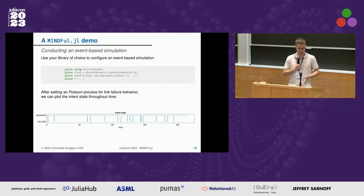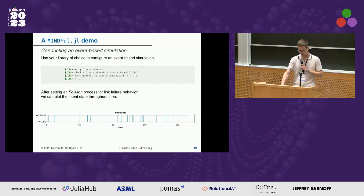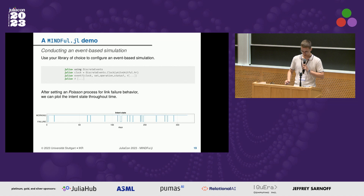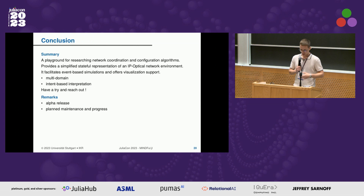You can further use that for event-based simulation with your third-party library of choice. Here we use DiscreteEvents, and after setting a Poisson process for link failure behavior, we can plot the intent state throughout the whole simulation time — where the intent is in failure state whenever the link of the specific intent is also in failure state.